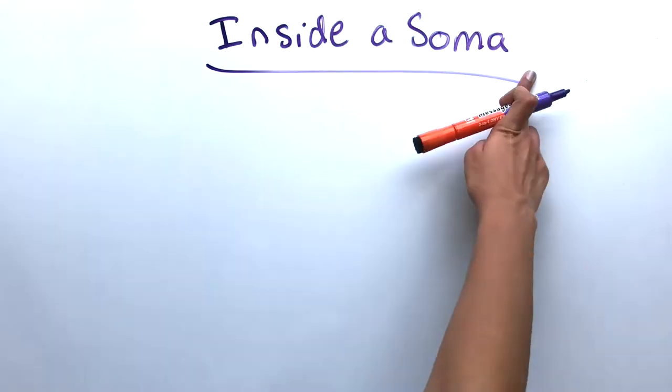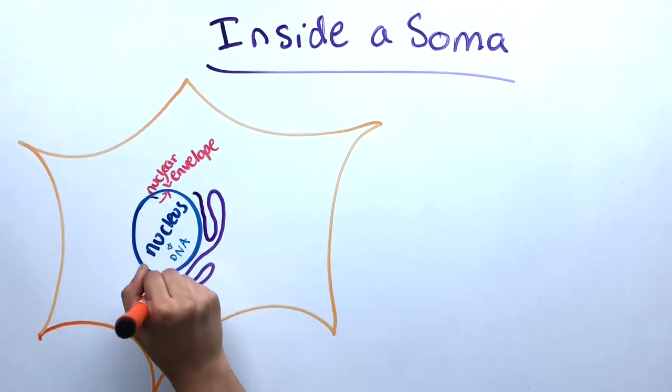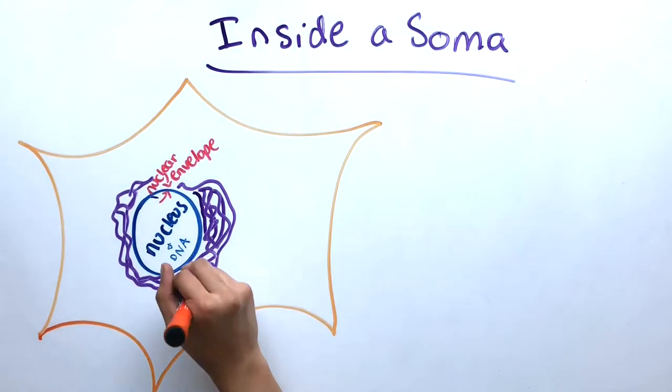The nucleus is contained within a double membrane called the nuclear envelope, and within the nucleus is our DNA, also known as deoxyribonucleic acid, which holds our genetic information.